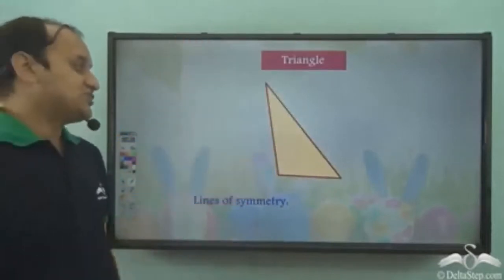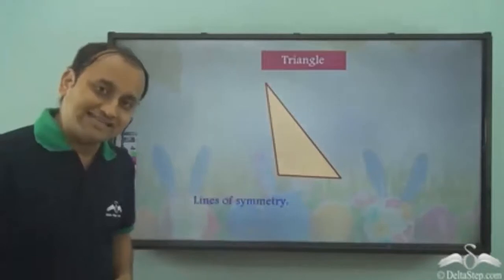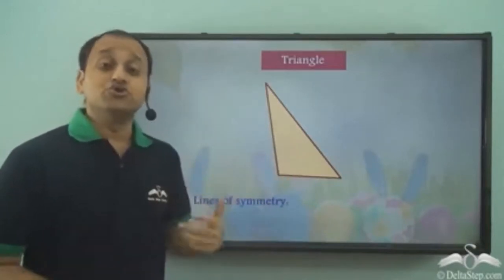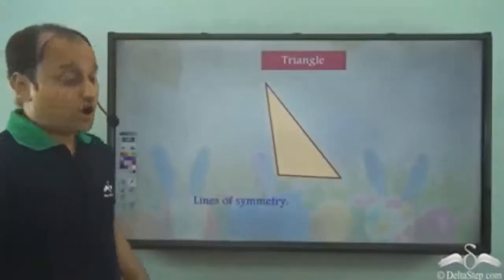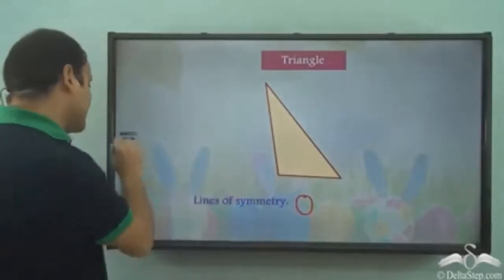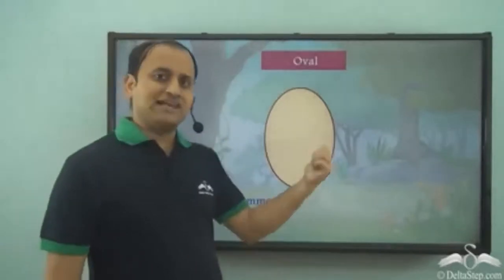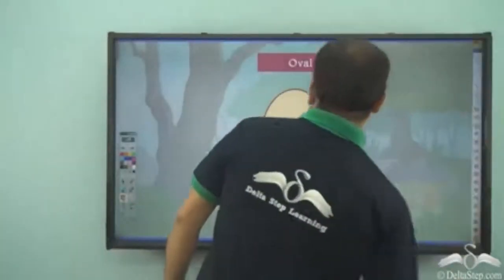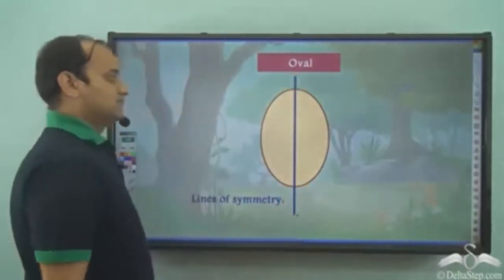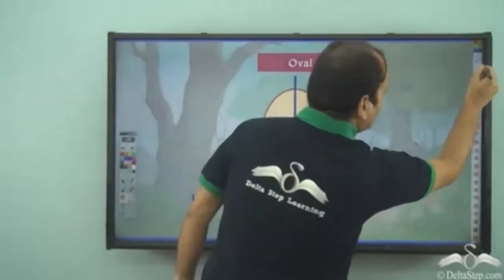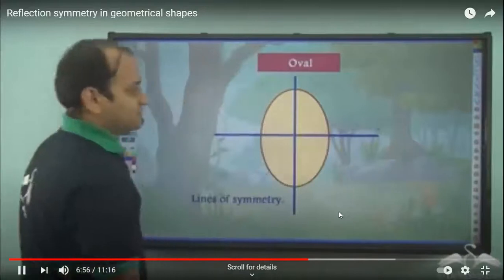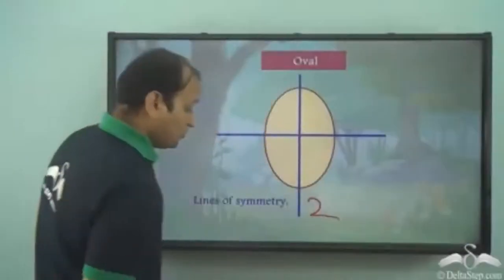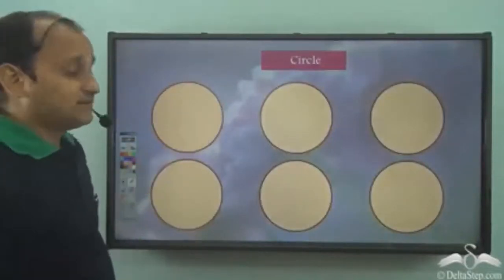What if we have a triangle in which all the sides are of different lengths? In such a case, there is no line that can divide this type of triangle into two mirror halves — so this is an asymmetric object and we have zero lines of symmetry. Now what about an oval? We find that the oval has a total of two lines of symmetry.